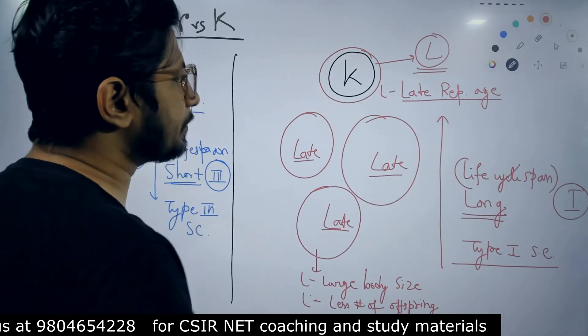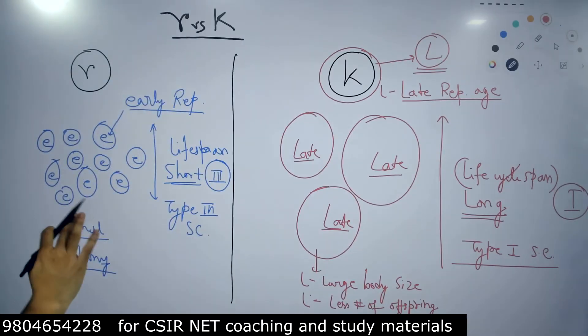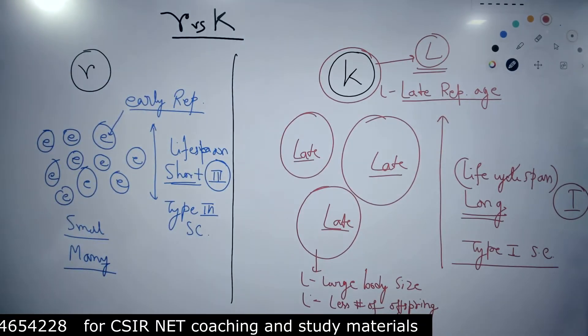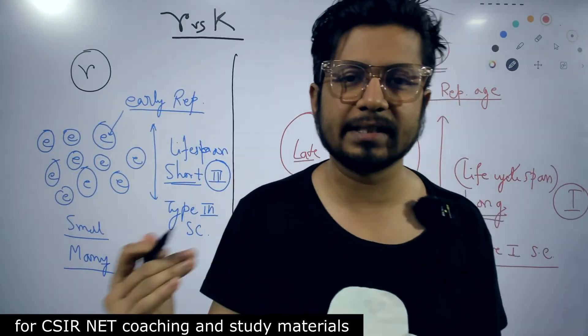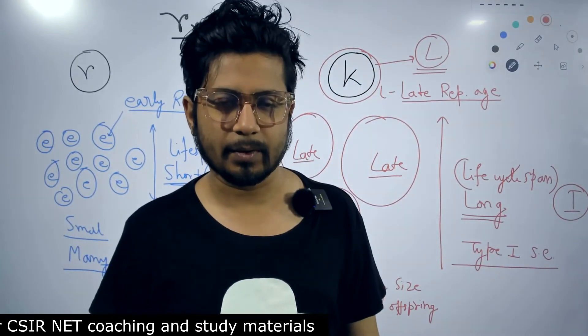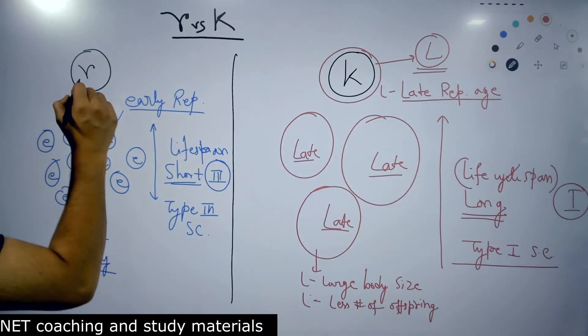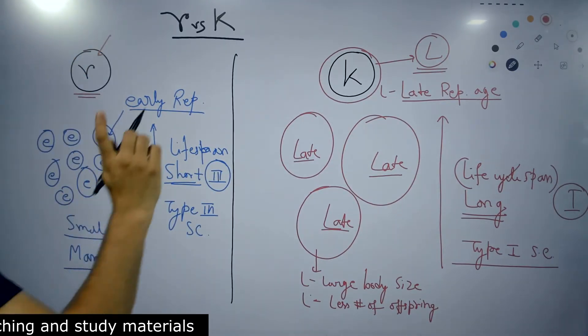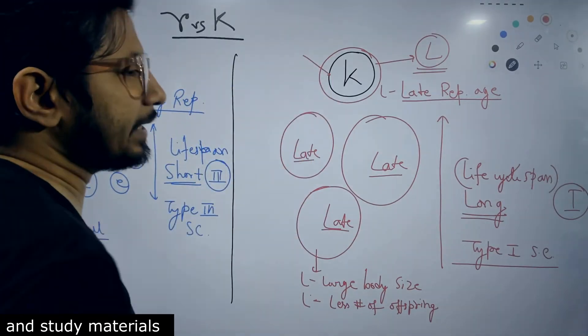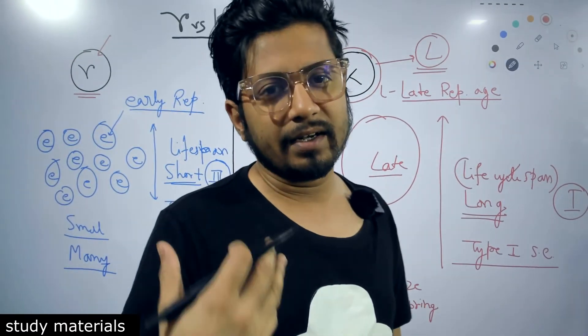They follow type 1 survivorship for K and for R follows type 3 survivorship curve. That is how you can remember R and K selected species easily. If you see the examples, those are mainly small, like cockroach, they belong to R selected species, while humans belong to K selected species. This is how you can remember.